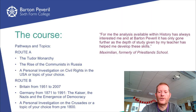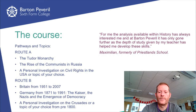For A-level history there are two courses you can take. We call these Route A and Route B. Route A is concerned with studying the Russian Revolution right through to the rule of Stalin — so this is 1917 to 1953 — alongside the Tudors, studying Henry VII right through to Elizabeth I.